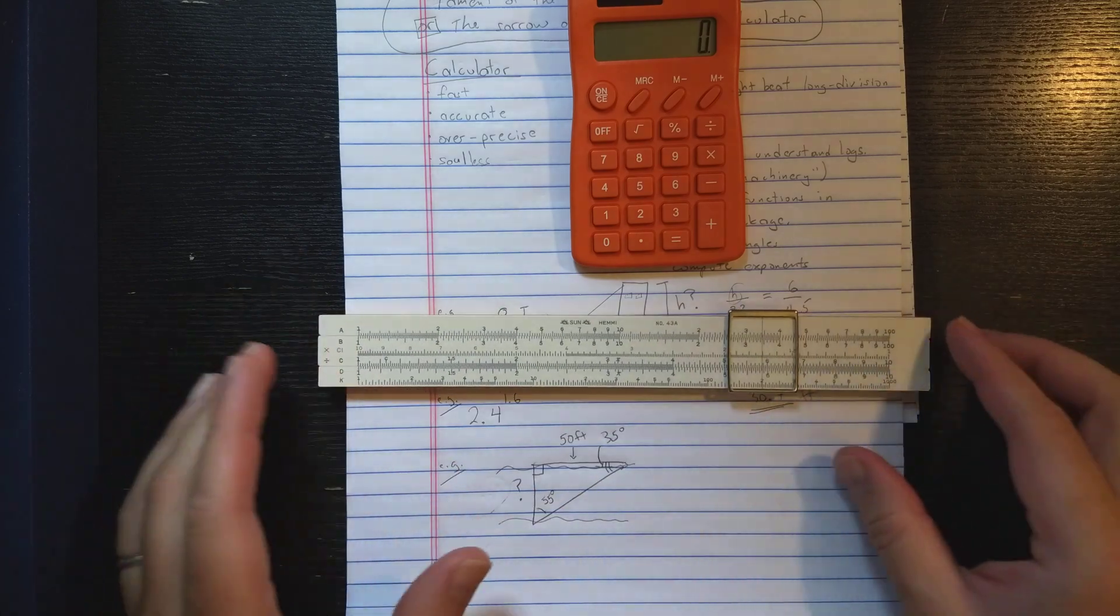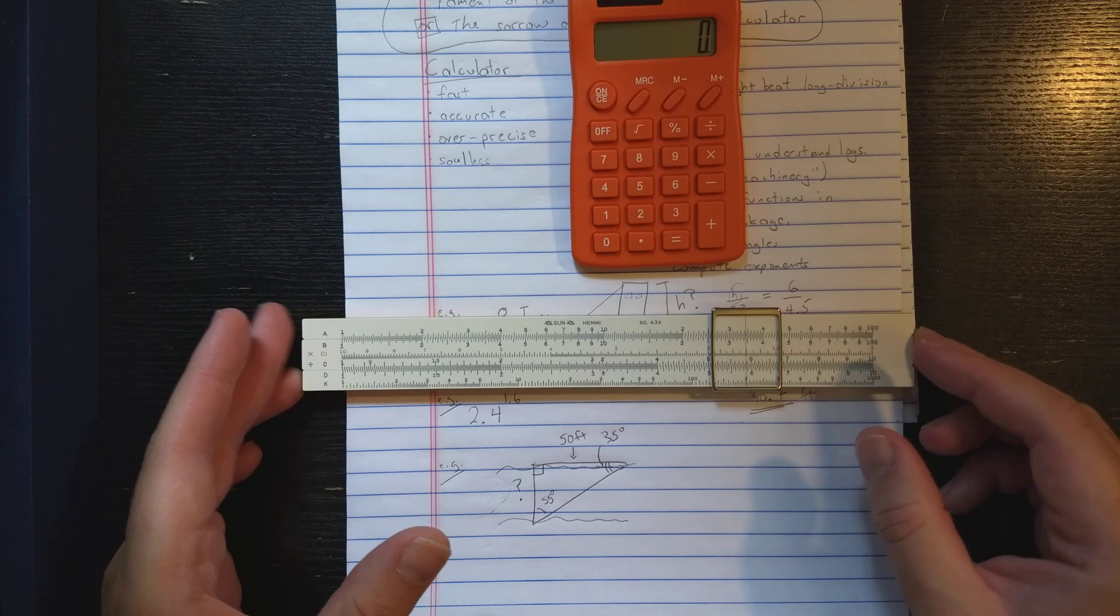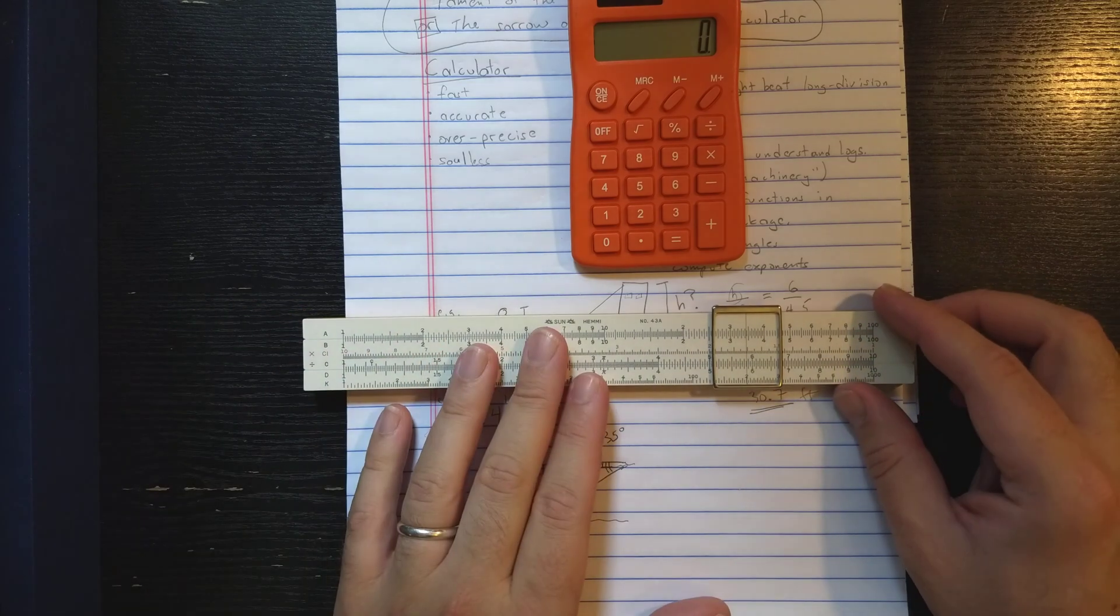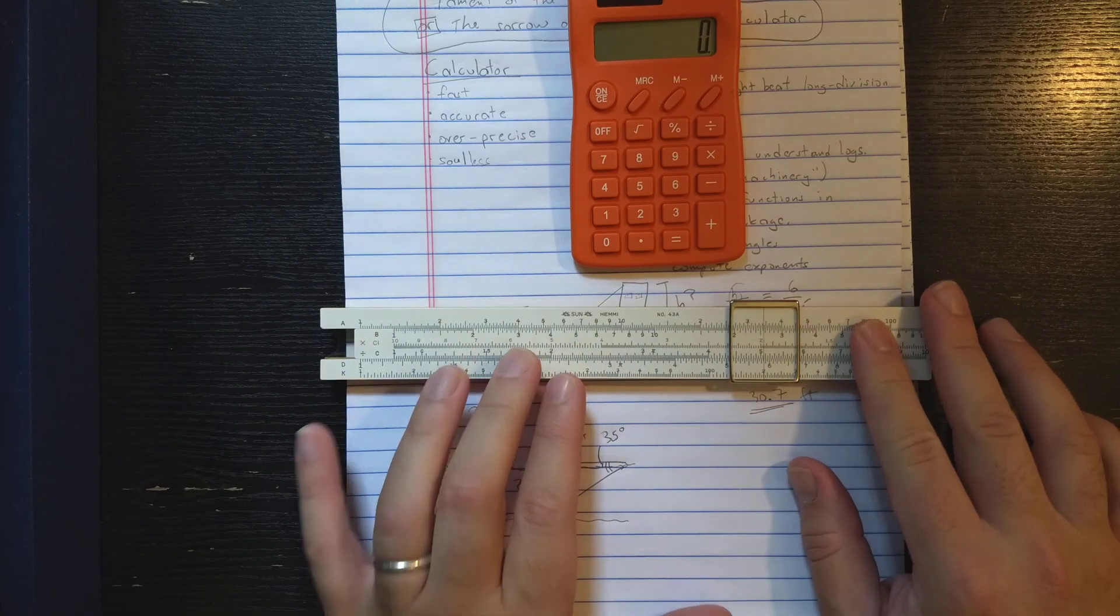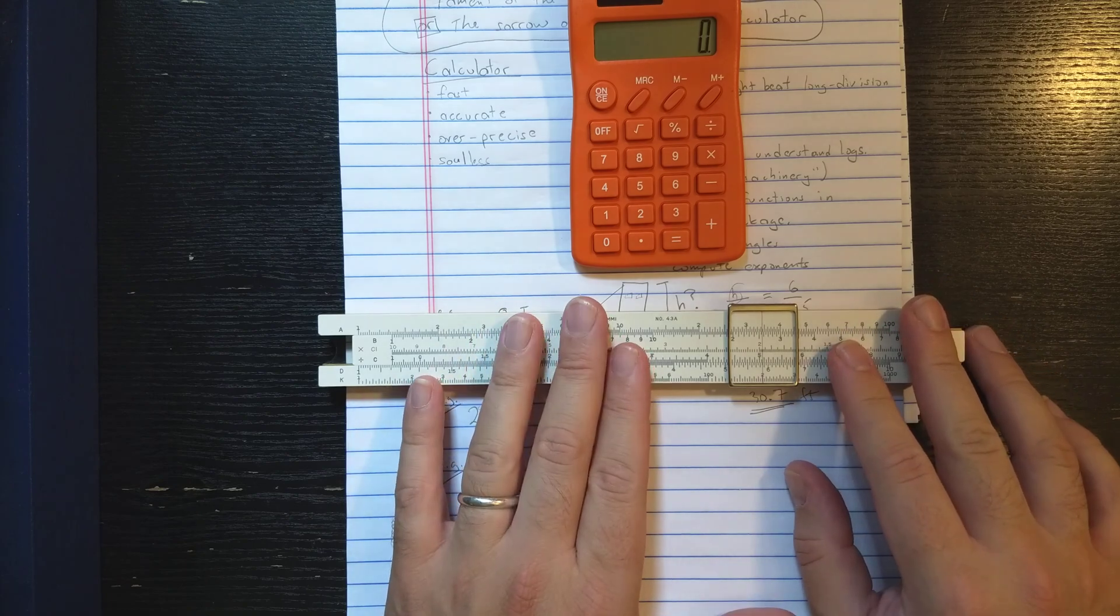So the accuracy of the slide rule, which is about three significant figures, is probably sufficient. Furthermore, you probably have a better understanding of the effective error from using the slide rule.